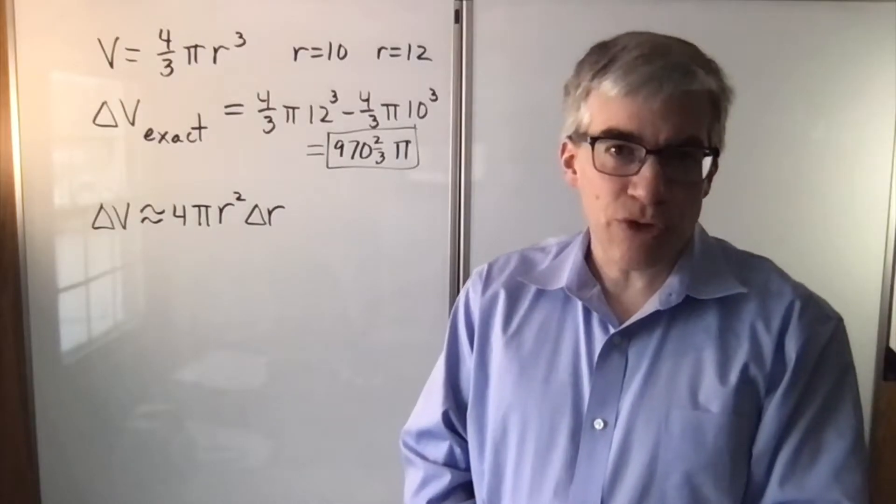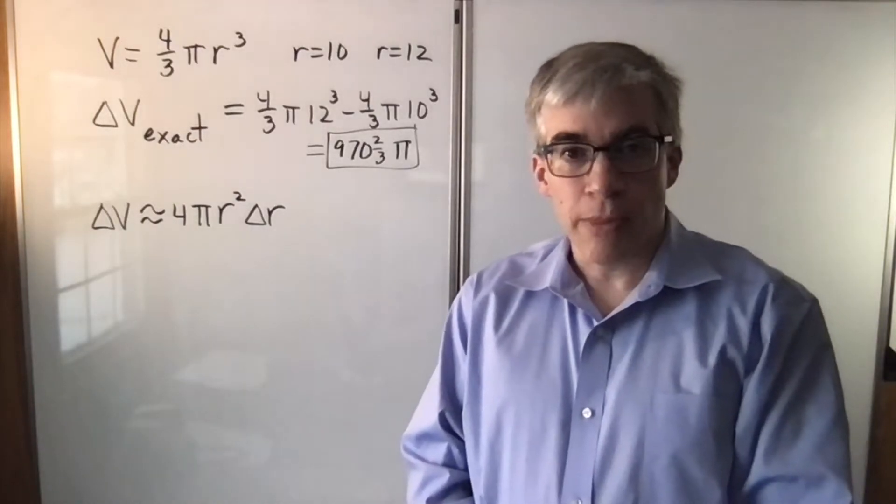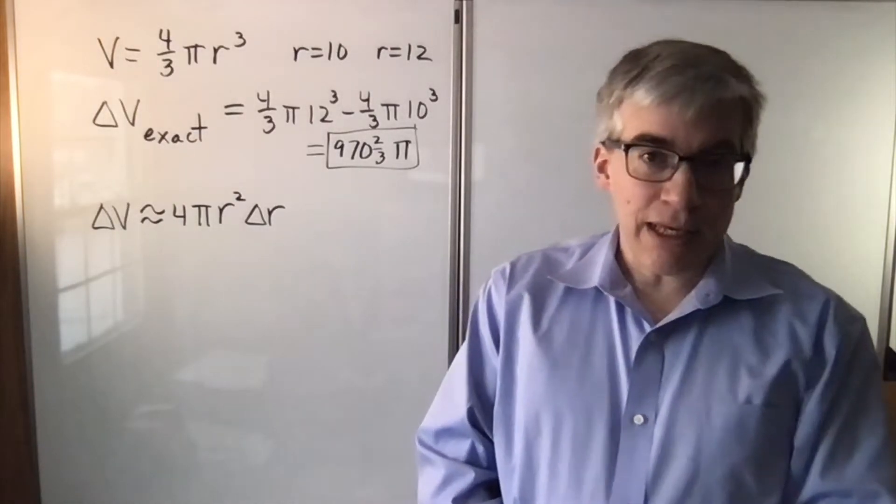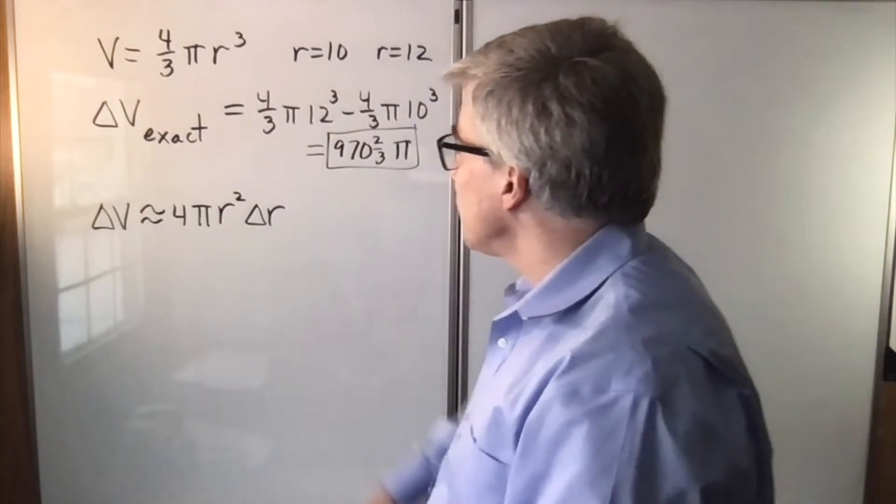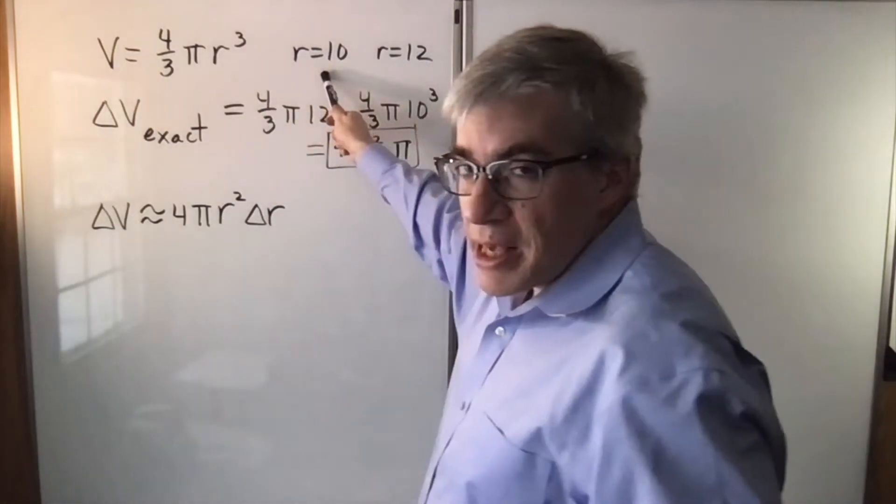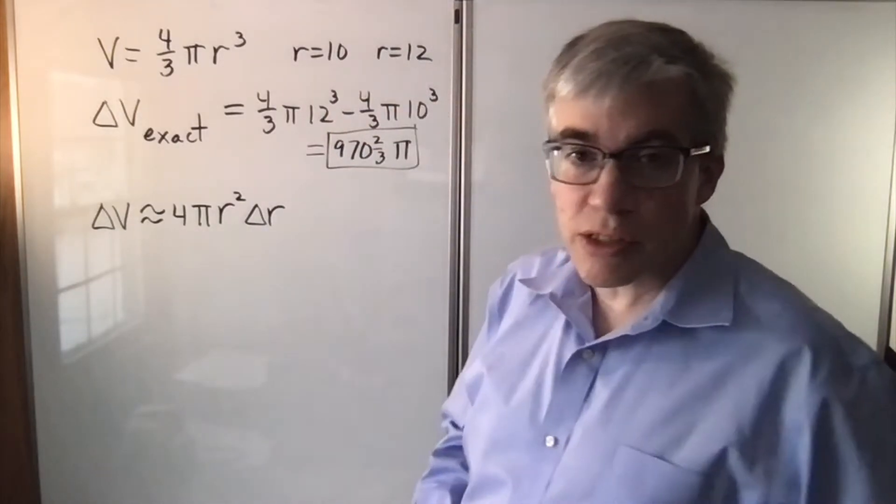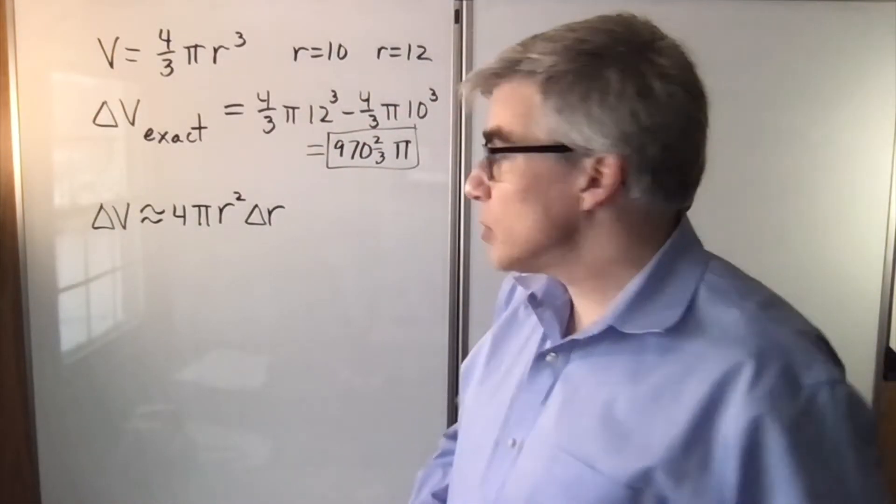Suppose you want the change in the volume of a sphere. We want to calculate exactly and then show various approximations we could use. First of all, if you have a sphere of radius 10 and it grows until the radius is 12, what's happened to the volume?